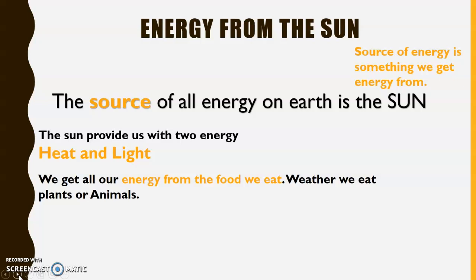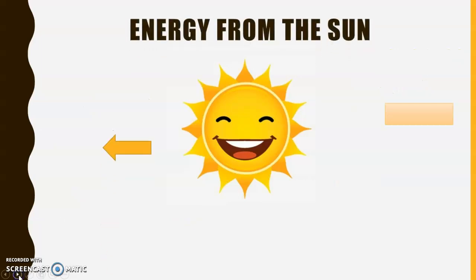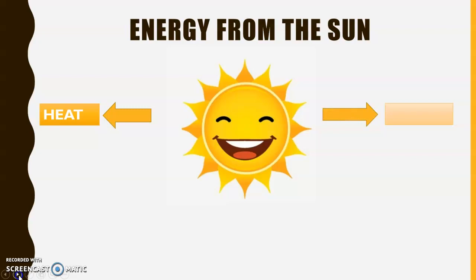We get all our energy from the food we eat, whether we eat plants or animals. The sun gives off heat energy, which we feel on our skin if we stand outside for too long. It also gives us light energy, which allows us to see each other during the day without turning the lights on.